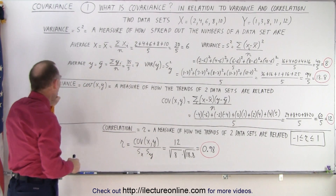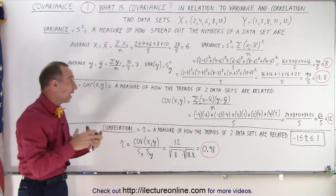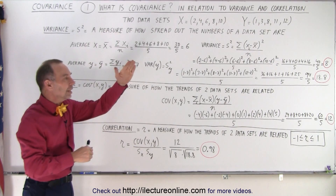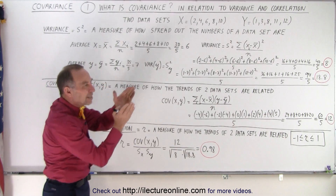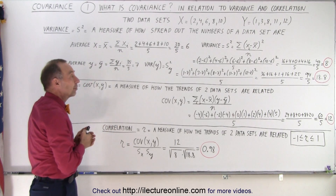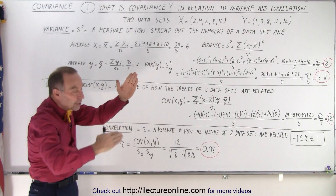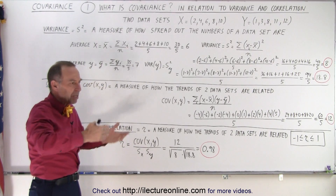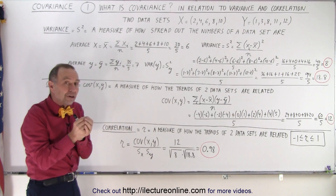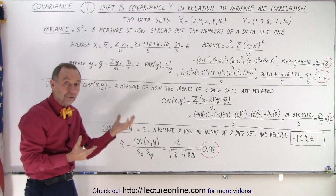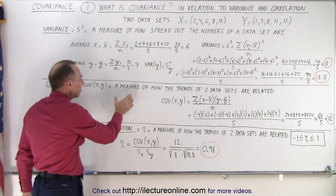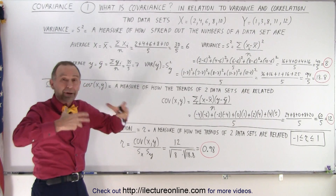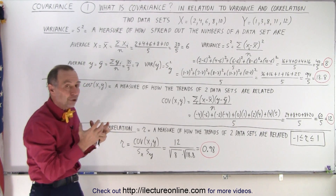So what do we mean by the covariance? The covariance deals with comparing two data sets — the X data set compared to the Y data set. What we're comparing is: if one is increasing and the other one is also increasing, that gives a large positive covariance. If one data set is increasing while the other is decreasing, that gives a large negative covariance. And if there doesn't seem to be any relationship between the two data sets, the covariance would be very near zero. It is a measure of how the trends of the two data sets are related.